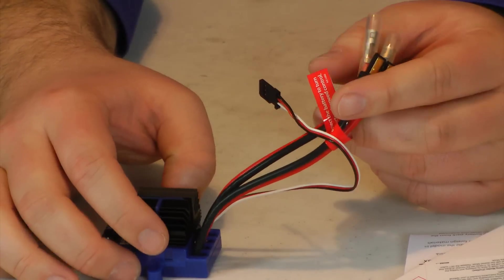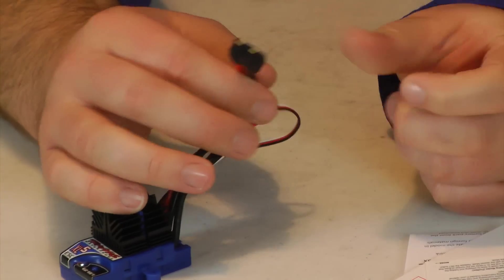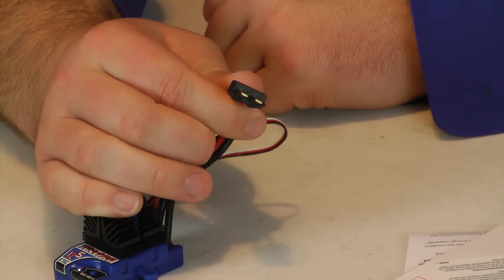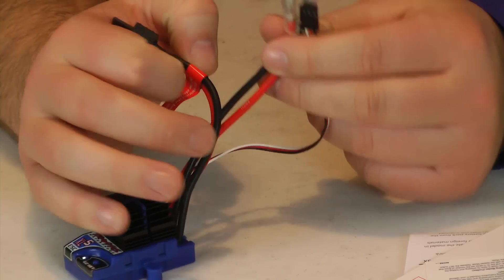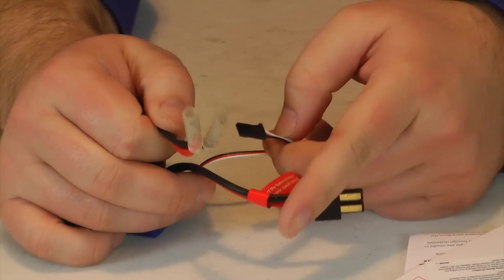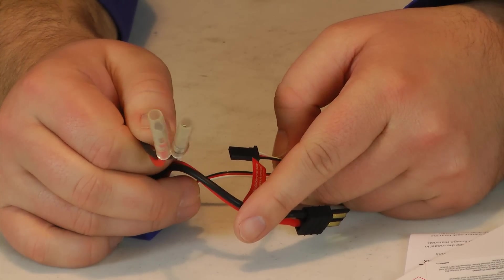All the wires are already connected here. You've got the standard Traxxas connector for the battery, which we'll be switching out to Dean's, of course, so this never happens again. And you've got your power that goes out to the motor.